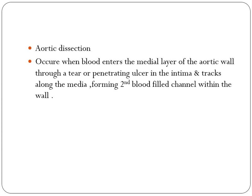Aortic dissection occurs when blood enters the medial layers of the aortic wall through a tear or penetrating ulcers in the intima and tracts along the media, forming a second blood-filled canal within the wall.